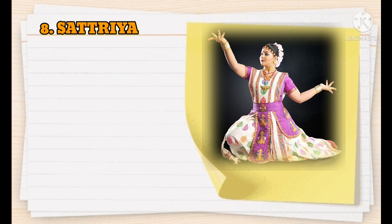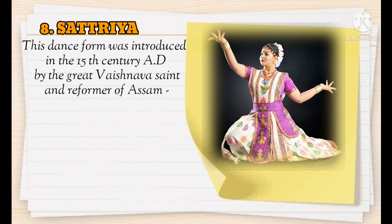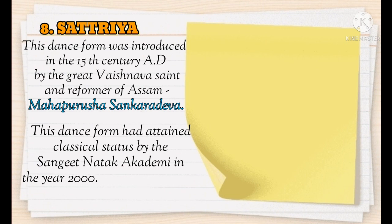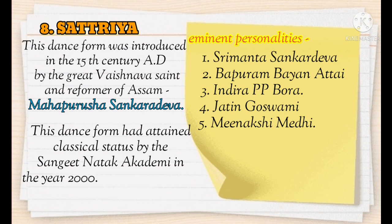Next is Satriya — this dance form was introduced in the 15th century AD by the great Vaishnava saint and reformer of Assam, Mahapurusha Srimanta Sankaradeva. It attained classical status from the Sangeet Natak Academy in the year 2000. Eminent personalities include: Srimanta Sankaradeva, Bapuram Bayan Attai, Indira P. P. Bora, Jatin Goswami, and Meenakshi Medhi.